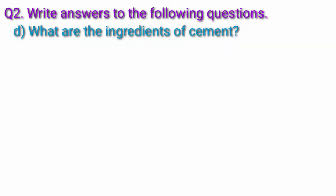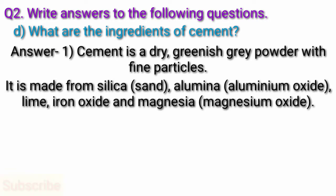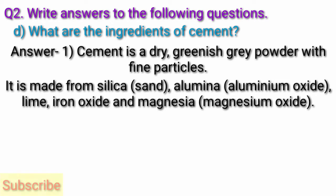Question D: What are the ingredients of cement? Answer: Cement is a dry, grayish-green powder with fine particles. It is made from silica, sand, alumina (aluminum oxide), lime, iron oxide, and magnesia (i.e., magnesium oxide).